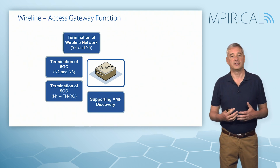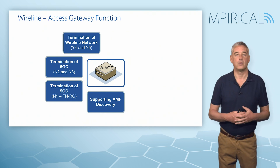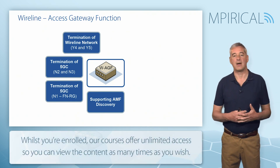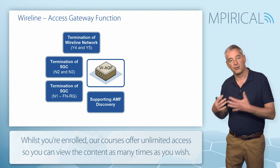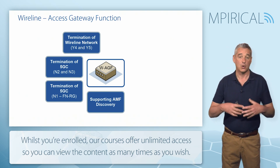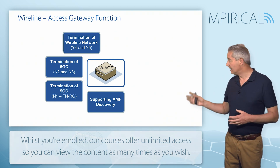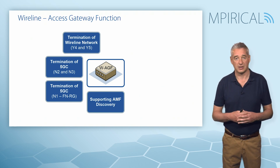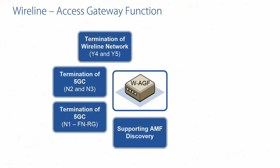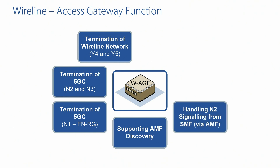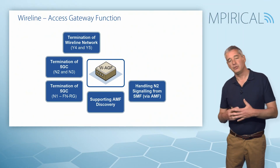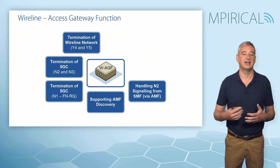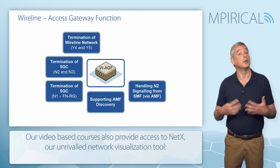The WAGF also needs to support AMF discovery. When 5G or Fixed Network Residential Gateways connect to the network, it's important that the correct AMF — the Access and Mobility Management Function — is attributed for handling their registration. This can be done through identities passed up to the WAGF, namely the 5G-GUTI or the GUMMI — our Globally Unique AMF Identifier. We've also got handling of N2 signaling from the SMF, which, even though it won't directly connect to the WAGF, passes signaling via the AMF for things like PDU sessions.